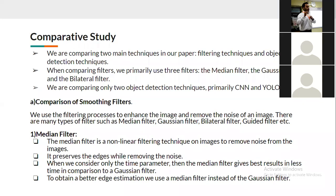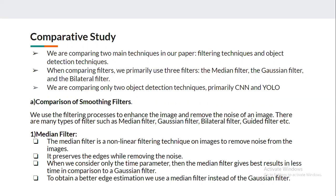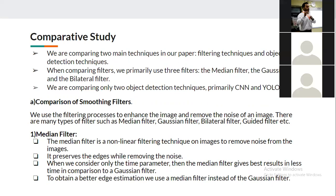When we consider only the time parameter, the median filter gives the best results in less time compared to a Gaussian filter. To obtain better edge estimation, we use a median filter instead of the Gaussian filter.